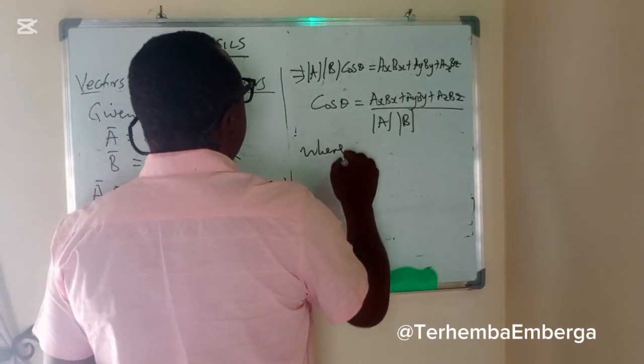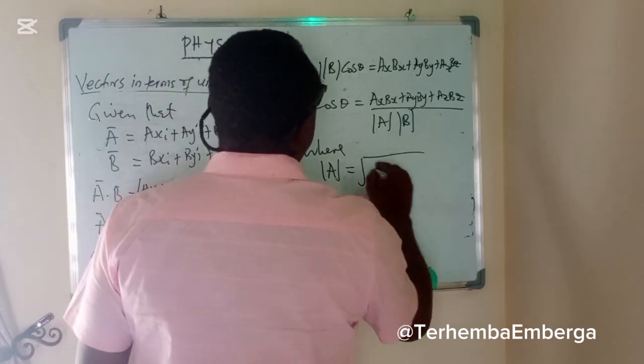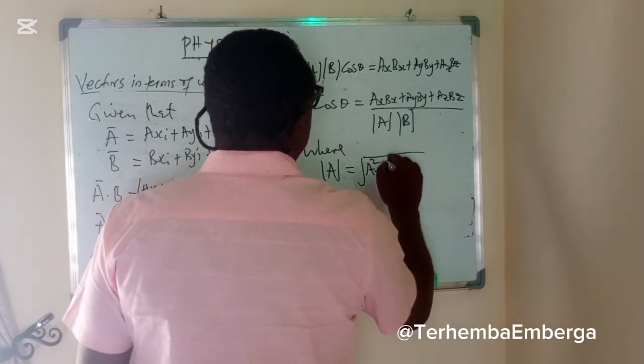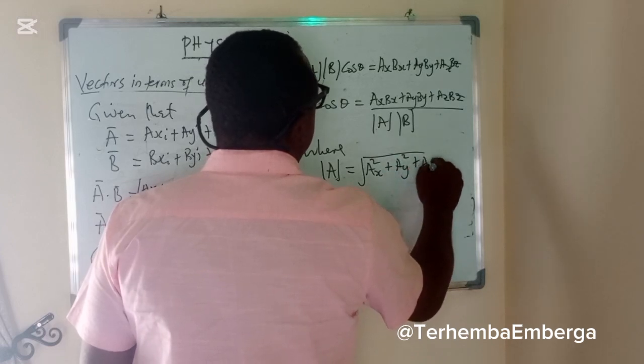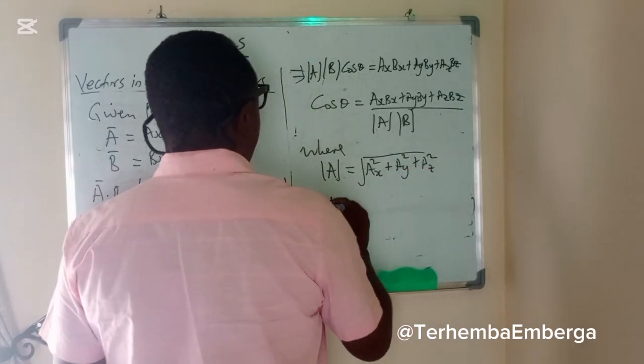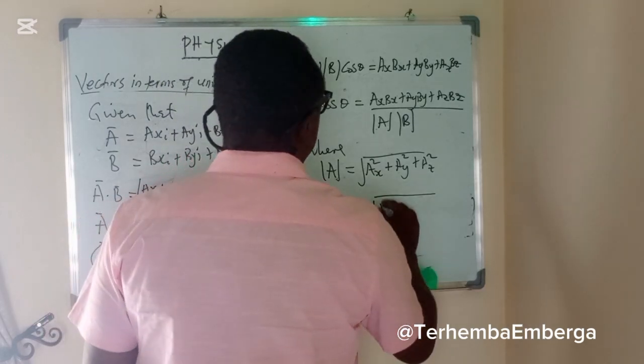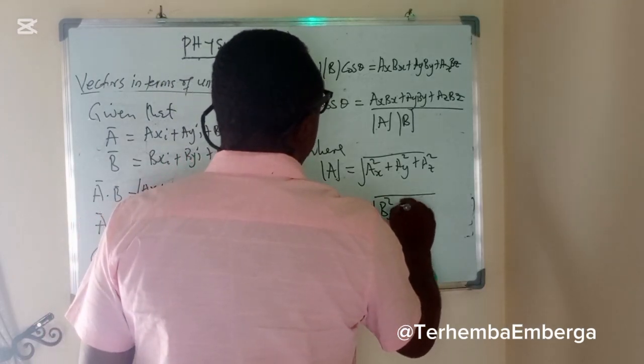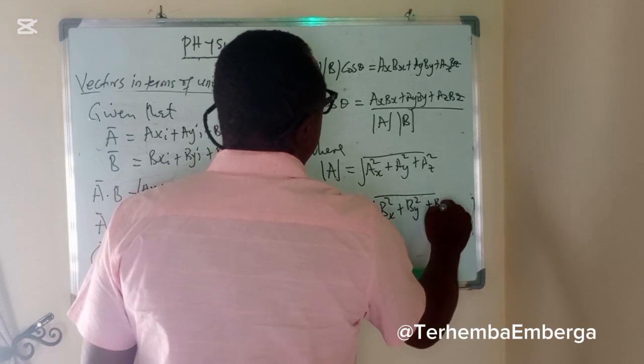Modulus of A is equivalent to square root of AX square plus AY square plus AZ square, and modulus of B is equivalent to BX square plus BY square plus BZ square.